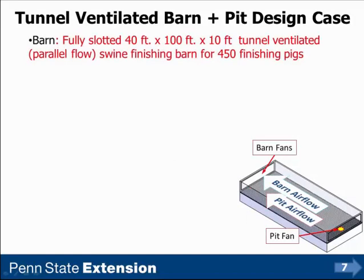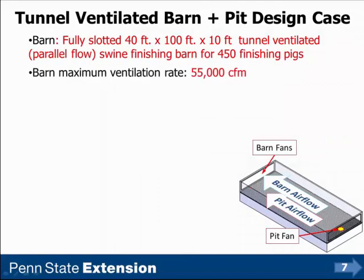The conditions for the case study: a 40 by 100 by 10 foot tunnel ventilated barn with parallel flow, for a swine finishing barn for 450 finishing pigs. The barn maximum ventilation rate is 55,000 CFM. We do not recommend that the barn above it is ventilated at the maximum hot weather rate for a fully stocked animal facility, and for 450 pigs, 55,000 CFM is approximately that value.